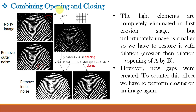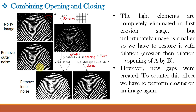Opening and closing can be combined for numerous applications. For example, in fingerprint enhancement: a noisy image has undesirable noise removed by erosion, but the eroded image is much smaller, so dilation is performed — this is called opening — removing outer noise. However, inner noise may still remain, so dilation is performed again on this output, making it thicker, followed by erosion — which is dilation followed by erosion, i.e., closing. Hence, combining opening and closing yields the enhanced image.